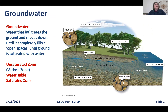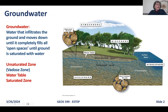Let's start with a simple definition. What is groundwater? It's water that infiltrates the ground and moves down through earth materials until it completely fills all the open spaces — until the ground is saturated with water. There are four terms we need to understand here: unsaturated zone, vadose zone, the water table, and the saturated zone.